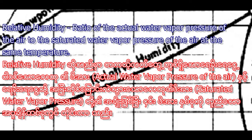Relative humidity is the ratio of the actual water vapor pressure of the air to the saturated water vapor pressure of the air at the same temperature. The humidity in the air relates to the water vapor pressure.